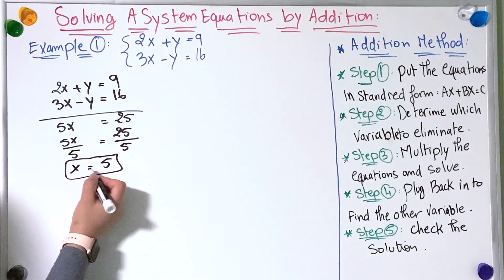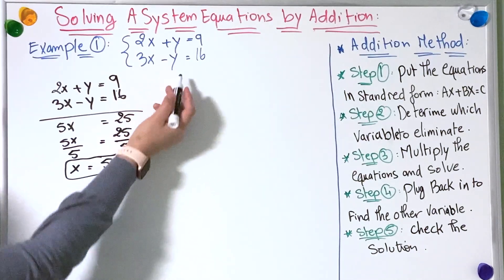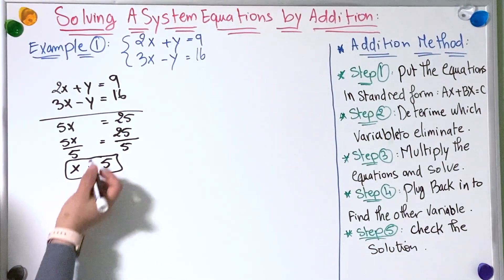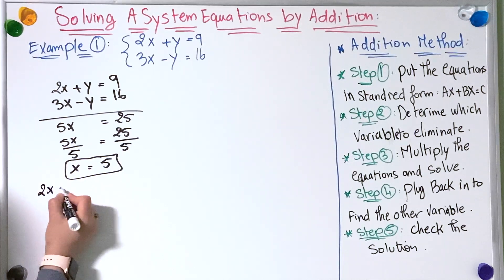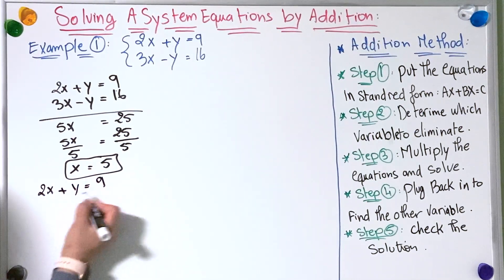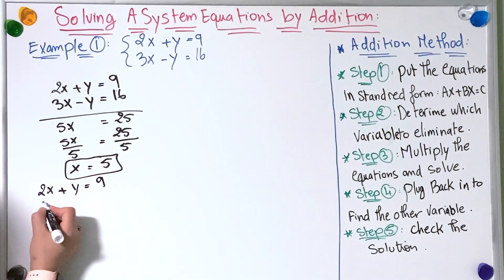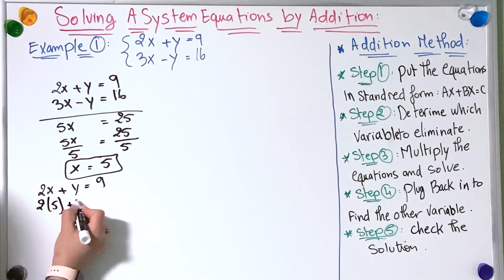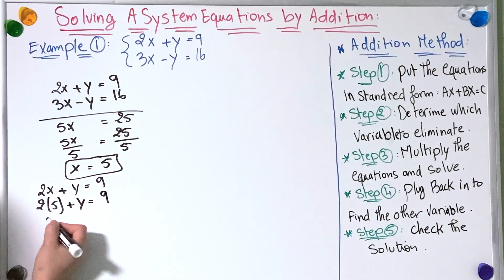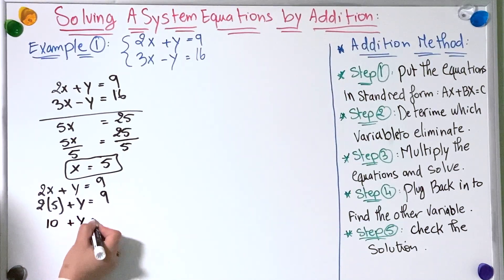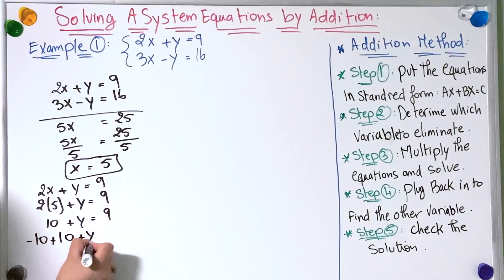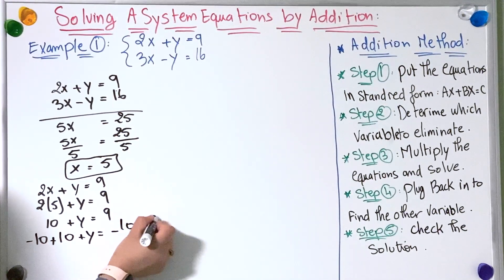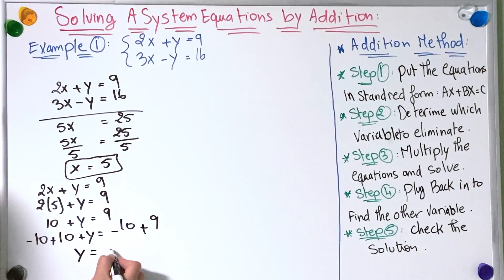Now I have x so I'm going to take it and replace it in one of the equations to find the other variable. It doesn't matter which one I choose — they both give the same answer. I'll take the first one: 2x plus y equals 9. Replacing x with 5: 2 multiplied by 5 plus y equals 9. To find y I'm going to subtract 10 from both sides, so y equals minus 1.